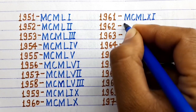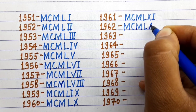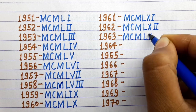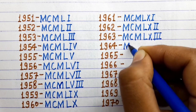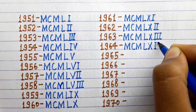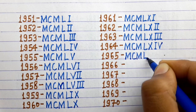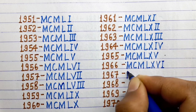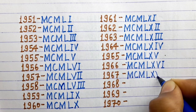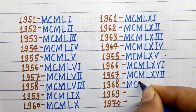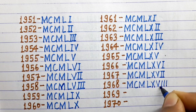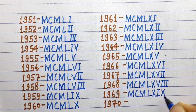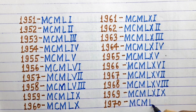1961 MCMLXI, 1962 MCMLXII, 1963 MCMLXIII, 1964 MCMLXIV, 1967 MCMLXVII, 1968 MCMLXVIII, 1969 MCMLXIX.